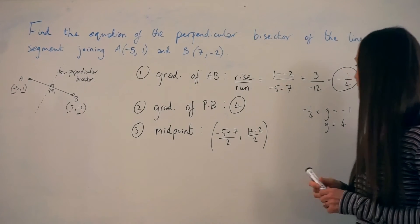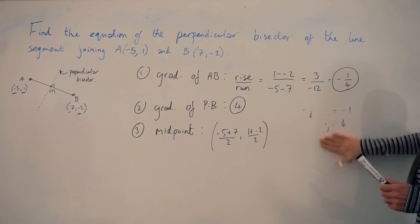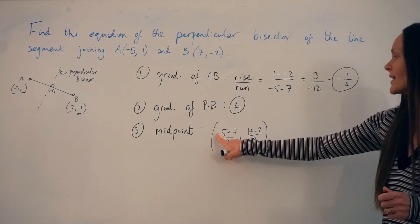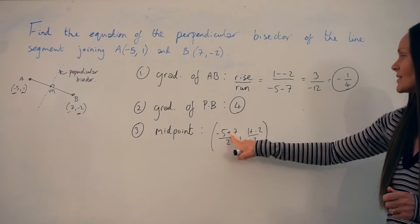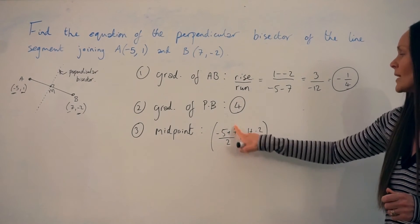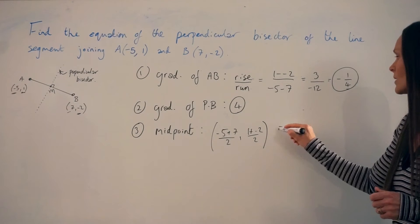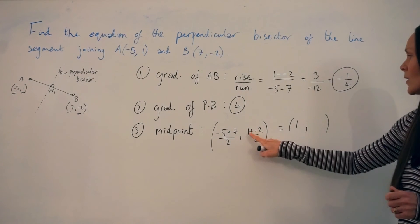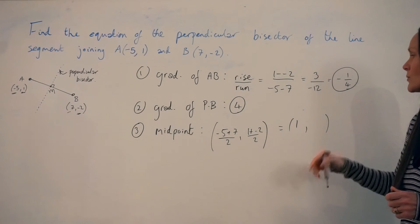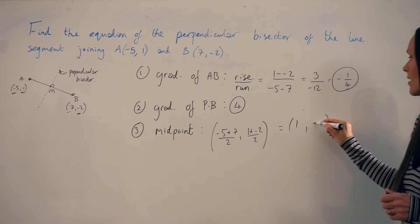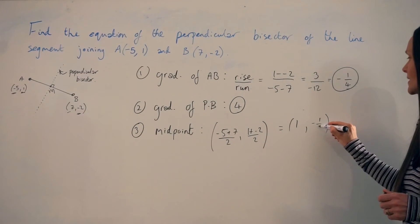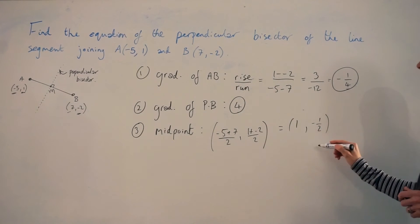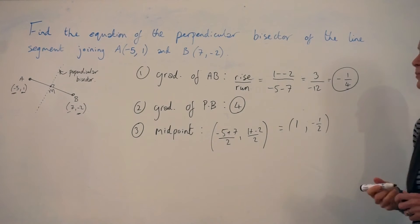Now let's calculate that. For the x-coordinates: negative 5 plus 7 is 2, and divided by 2 gives 1. For the y-coordinates: 1 take away 2 is negative 1, and divided by 2 gives negative 1/2. So the coordinates of the midpoint N are (1, -1/2).